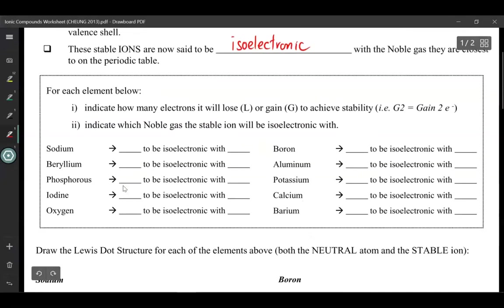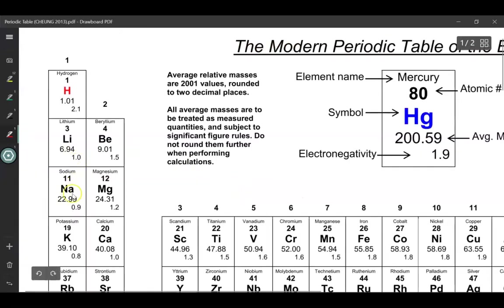So what I'd like you to do at this point is press pause, try out this section over here, and press play when you're ready. But let's go over one example together. Sodium is in group 1 of the periodic table, so it has one valence electron.